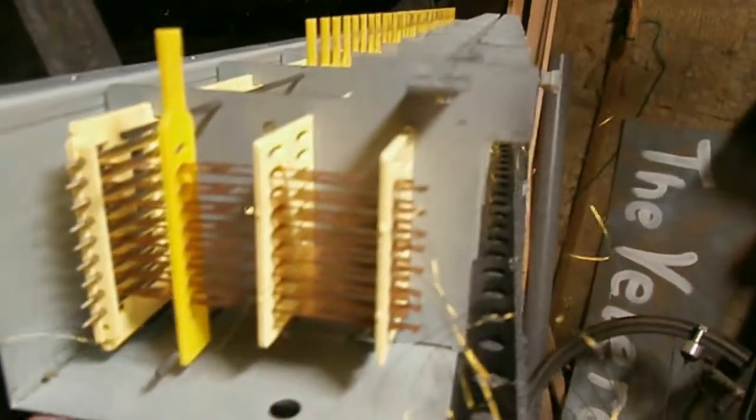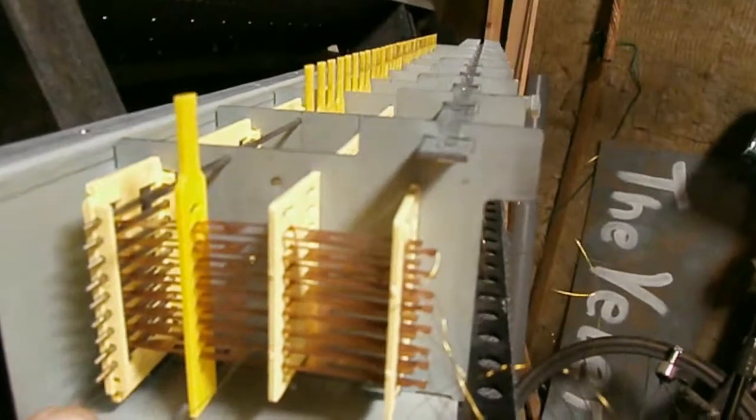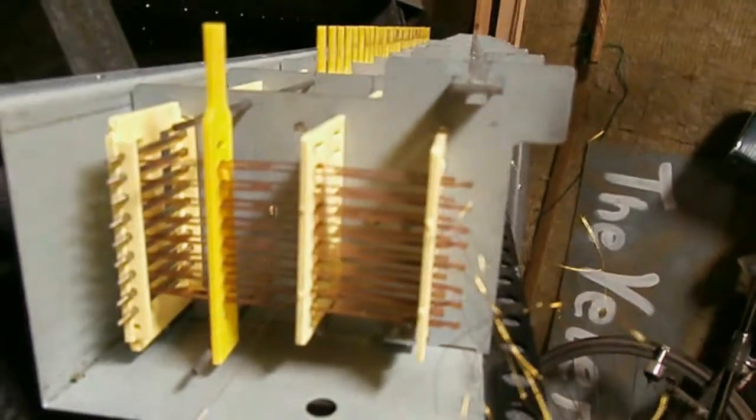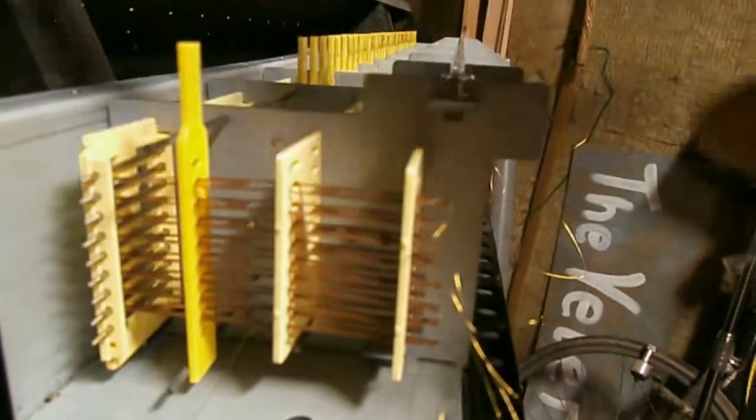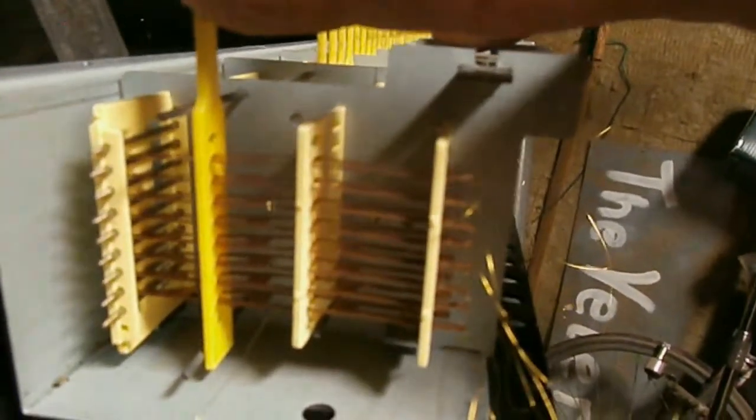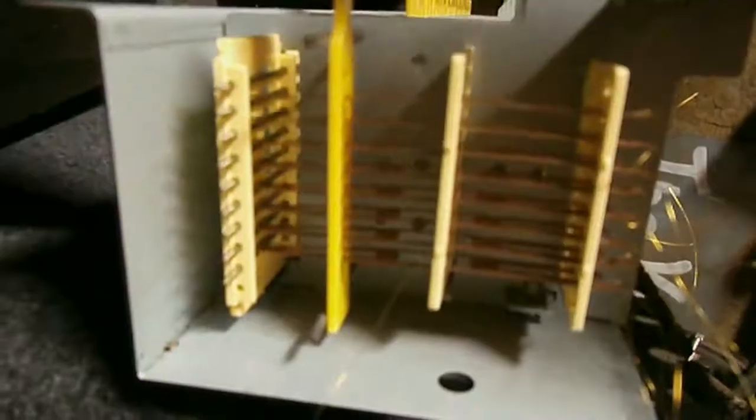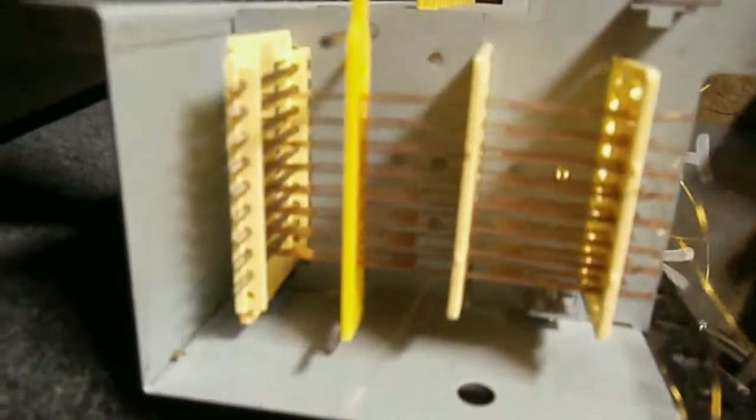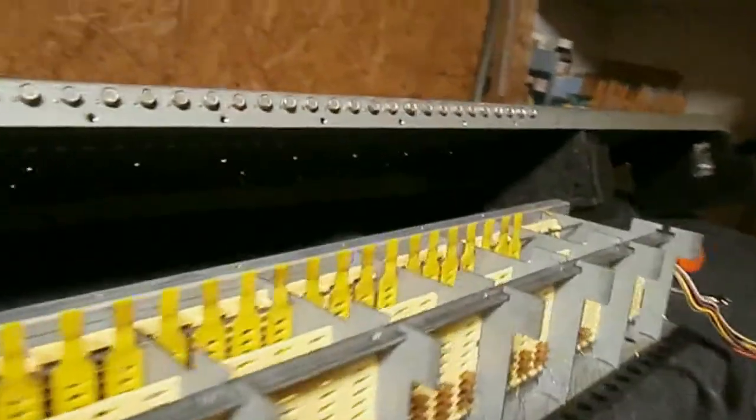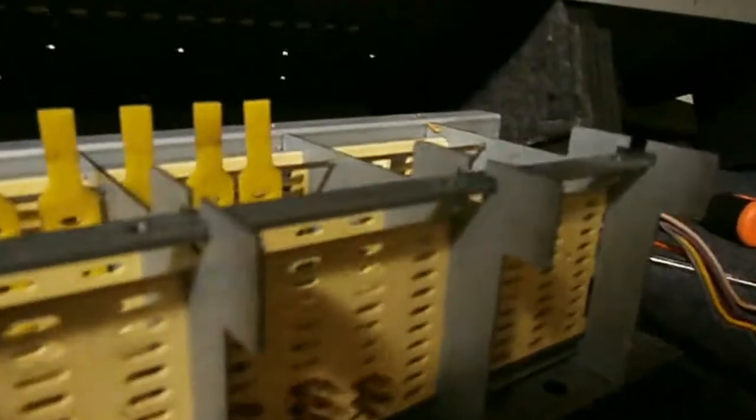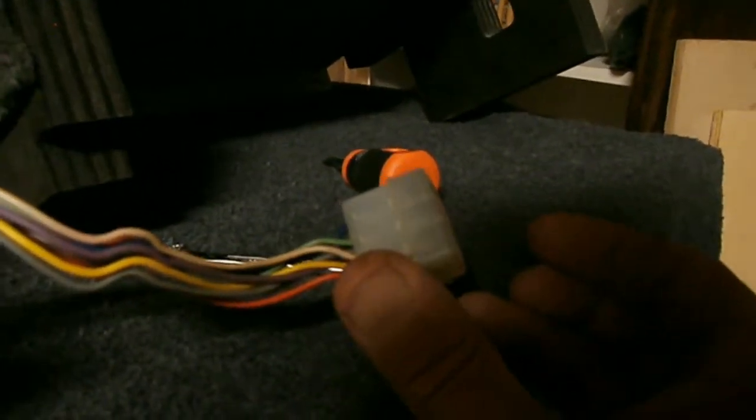Here you see the key contacts, and these are the boost bars. There are nine of them. When you push the key that's above here, the contacts make contact with the boost bars. The boost bars are all over the manual and they go to the wires, the colored wires that go to your draw bars.